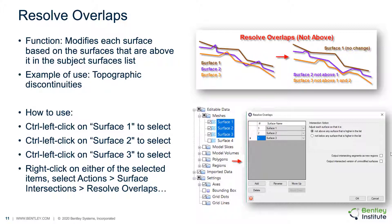The resolve overlaps function modifies each surface based on the surfaces that are above it in the subject surfaces list. The user may utilize this function by selecting all relevant surfaces while holding down the control key, then right-clicking on any surface and selecting Actions, Surface Intersections, Resolve Overlaps. The resulting dialog will allow functionalities to resolve the overlaps based on user-selected options.